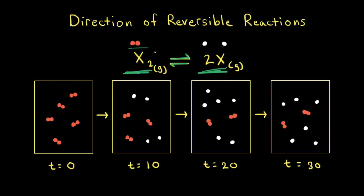Let's say that X2 is a reddish brown gas. If we assume that both the forward and the reverse reactions are elementary reactions, we can write the rate law from the balanced equation. For the forward reaction, the rate of the forward reaction equals the rate constant k_f times the concentration of X2. Since the coefficient in front of X2 is one, it's raised to the first power.